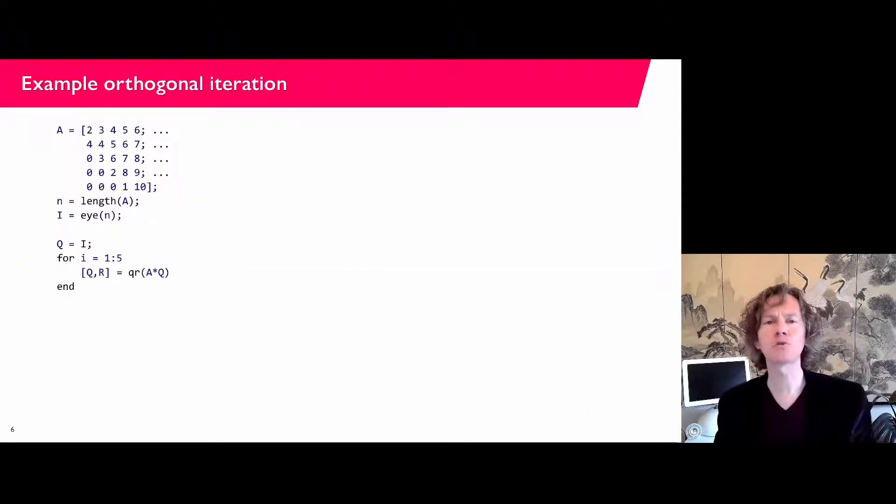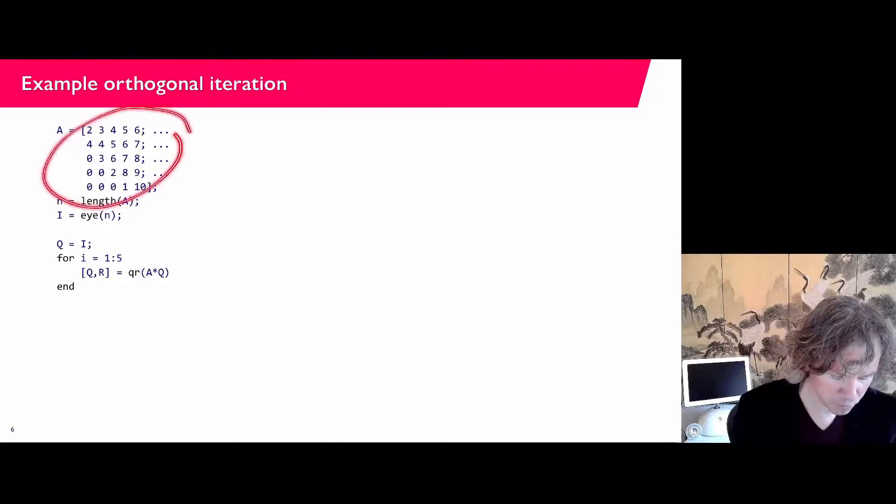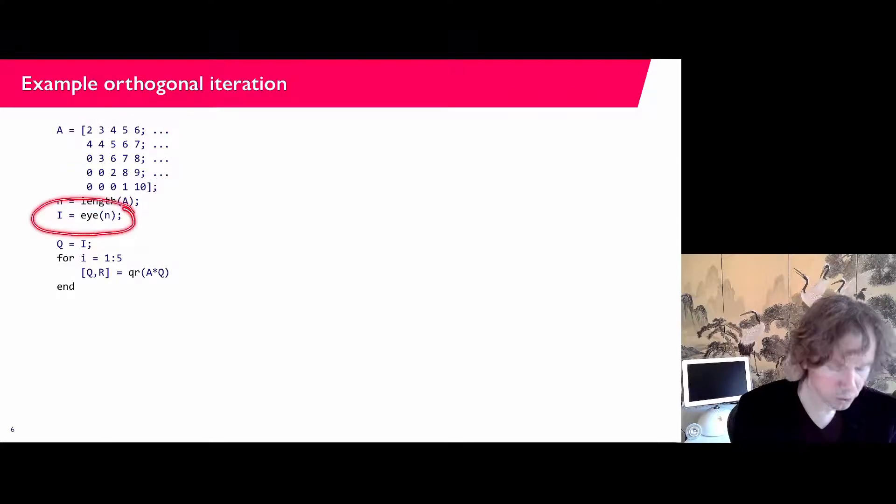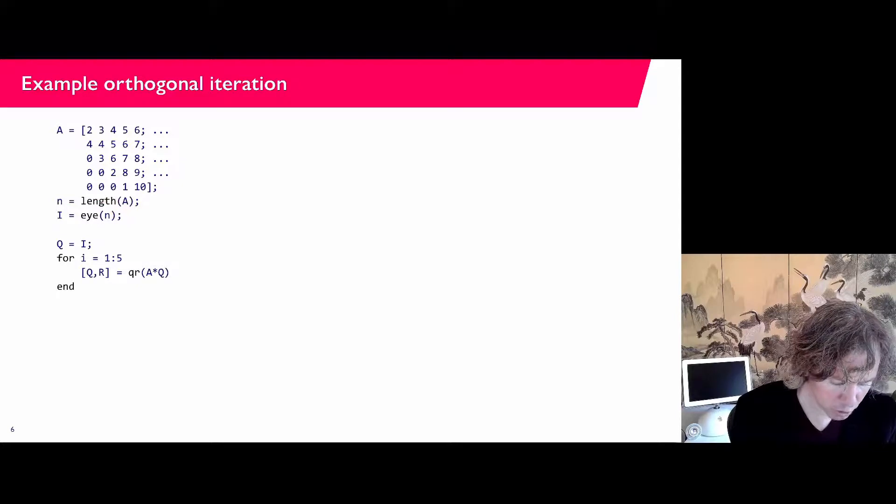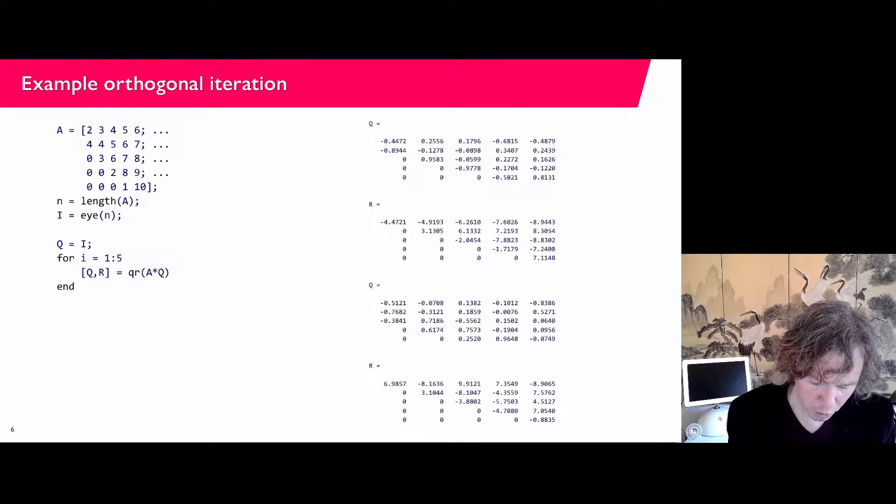So let's see how this works numerically. The matrix we have seen a couple of times already. I'm going to start my orthogonal iteration with the identity matrix so that all the columns have length one and they're orthogonal. And then in every iteration step I compute the new QR as the QR decomposition of A times Q. So let's see how this works.